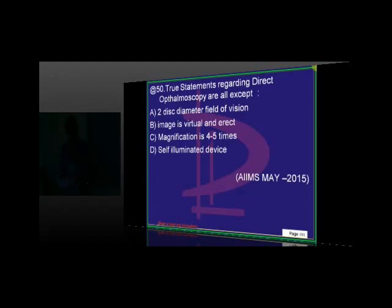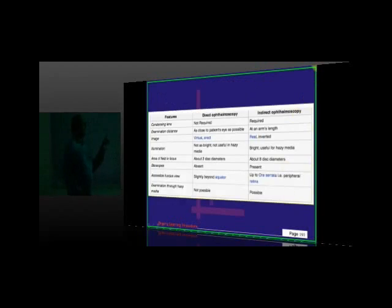Direct ophthalmoscope versus indirect ophthalmoscope. Another very traditional question. So doctor, what are the differences? Let us see. Virtual erect is direct. And the inverted real is indirect. Two disc diameters is direct. And the eight disc diameters is indirect. And the perception of the depth of a lesion, stereopsis is a feature which you see in case of indirect, but not in case of direct. Correct. So these differences, you need to be very, very sure about.